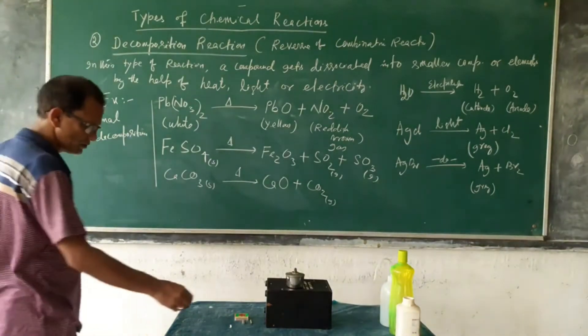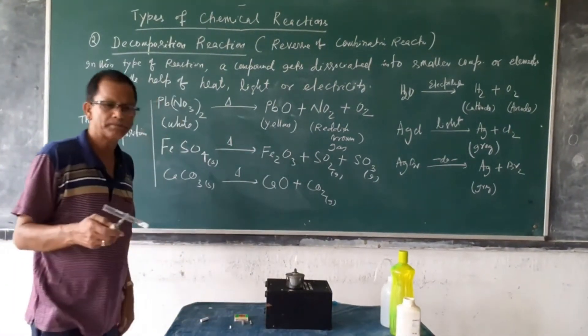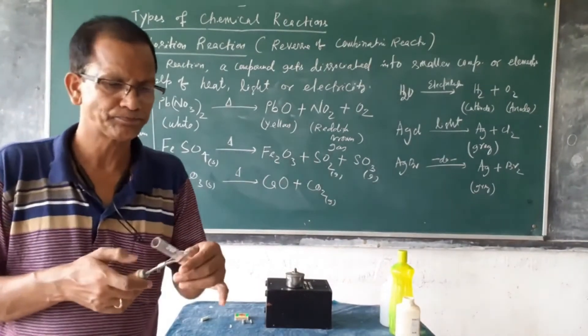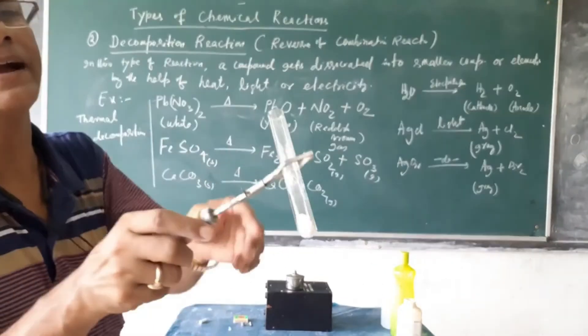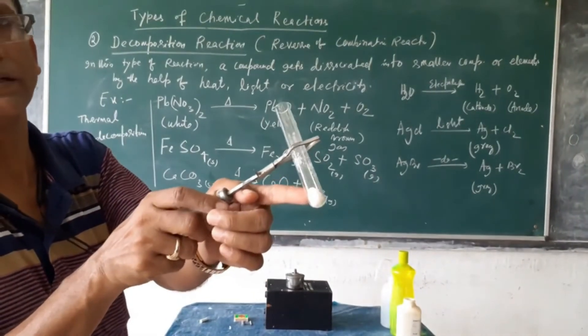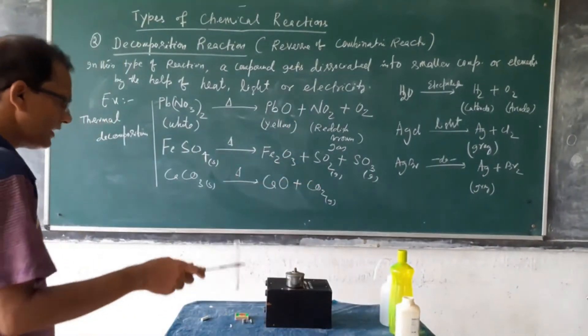You see the example. We are giving one example. Just you see. This is lead nitrate. This is lead nitrate. Lead nitrate crystal. White lead nitrate crystal.